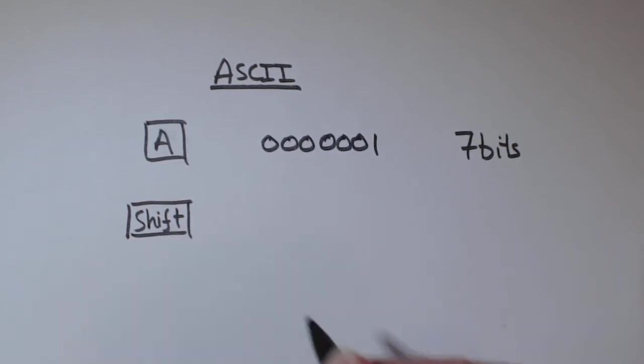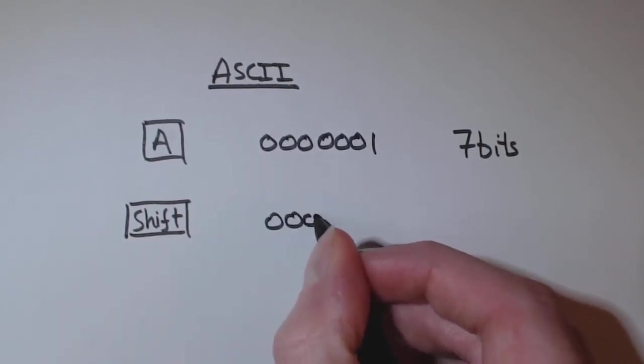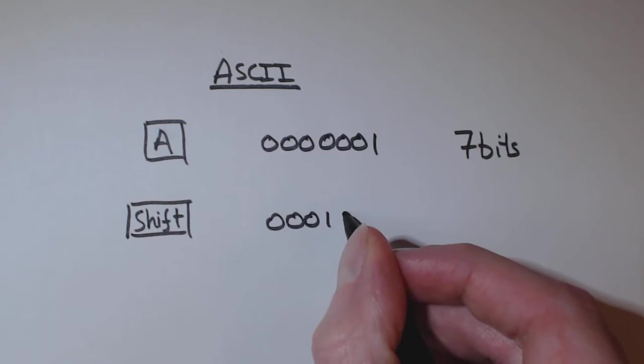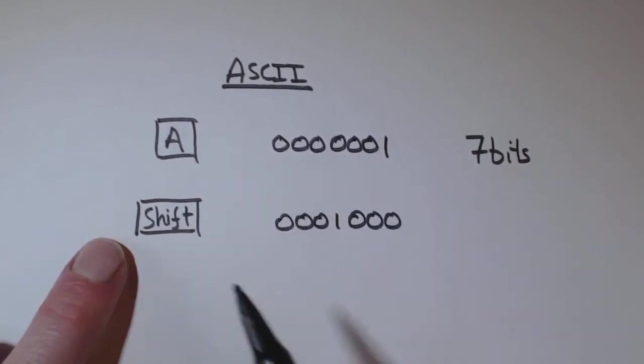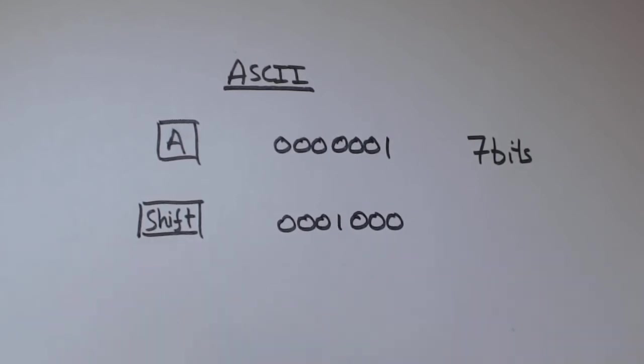If I press SHIFT, that might be another series of binary. If I press SHIFT and then press an A to get a capital A, then again, that will be another unique binary code.